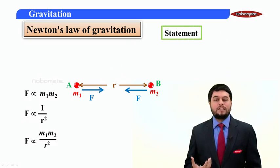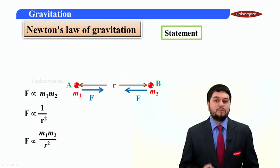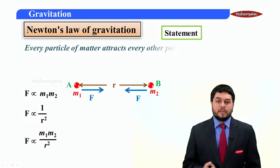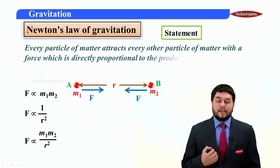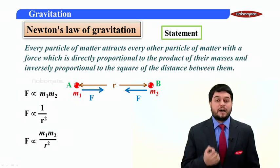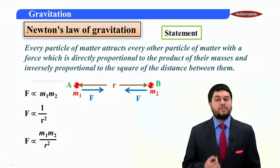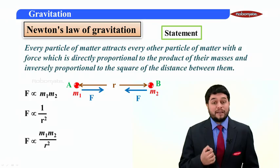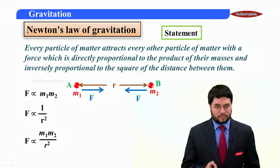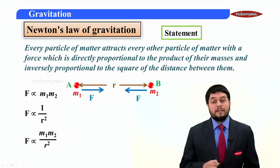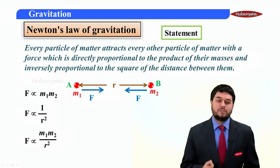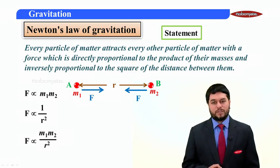Now, looking at this proportionality, it's very easy to define the law. The law goes something like this: every particle of matter attracts every other particle of matter with a force which is directly proportional to the product of the mass and inversely proportional to the square of the distance between them.